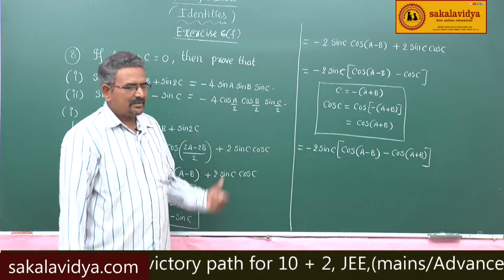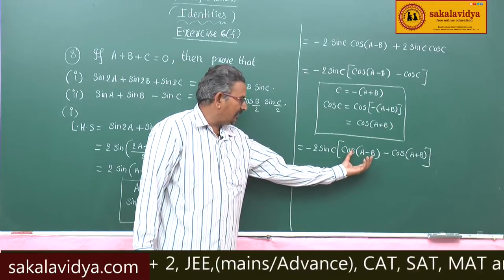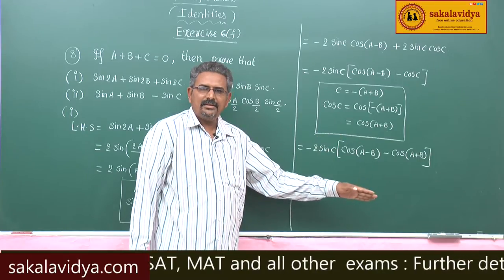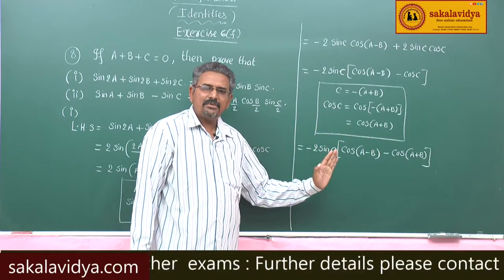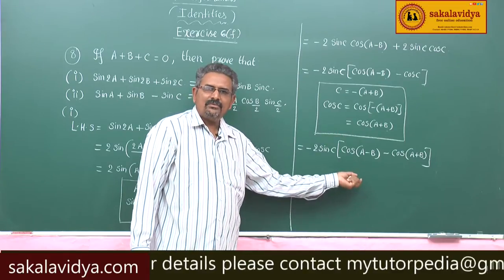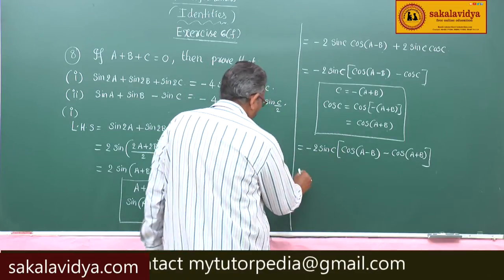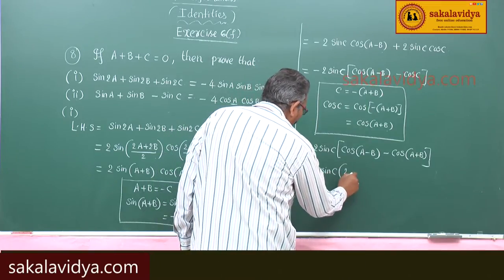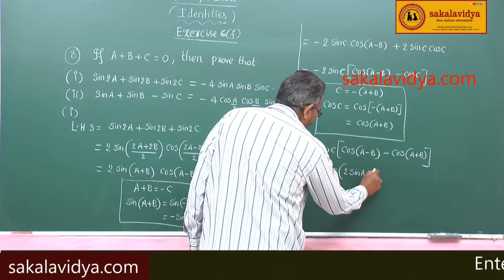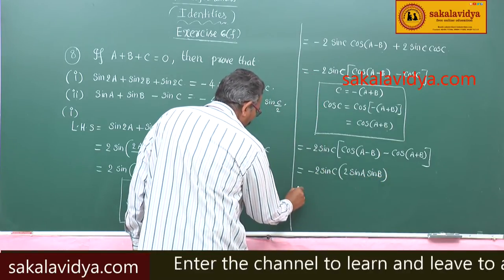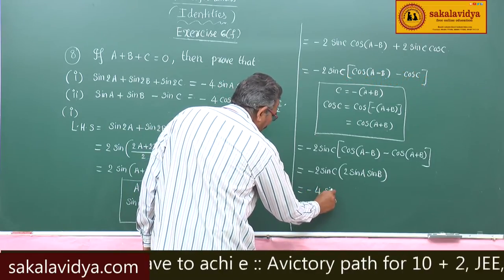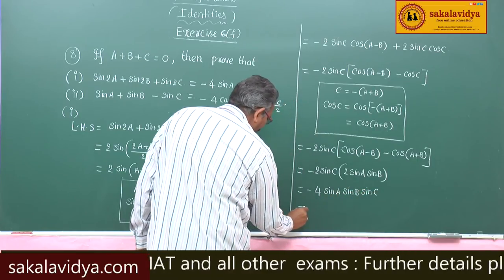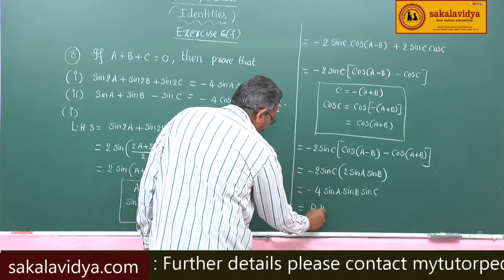Recall that cos(A-B) minus cos(A+B) equals 2 sin A sin B. So substituting, we get minus 2 sin C into 2 sin A sin B, which gives minus 4 sin A sin B sin C. This equals the right hand side, and the proof is complete.